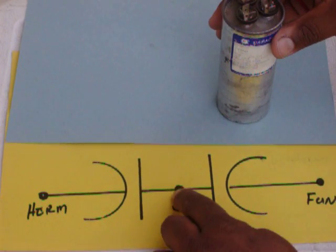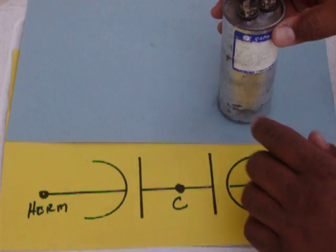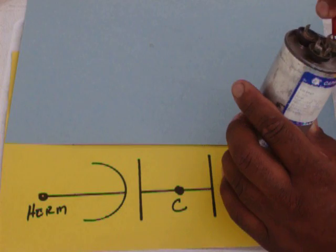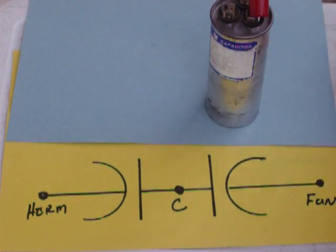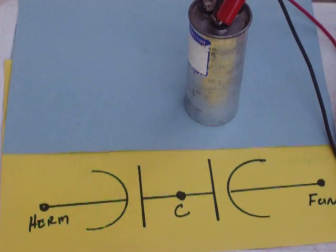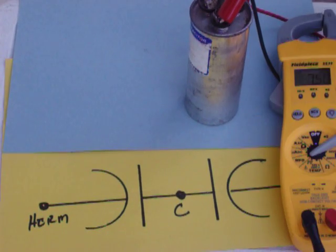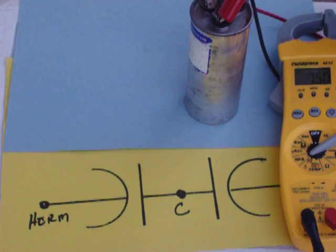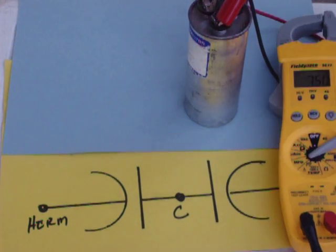Now we want to check from common to fan and we should get that 7.5 that we see. So I clip on common and then I clip on fan. Let my meter read it. 7.5 on the dot. So the fan side of it is good.